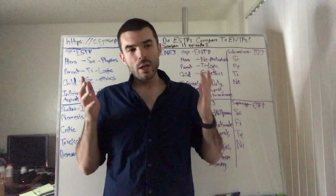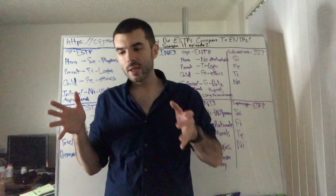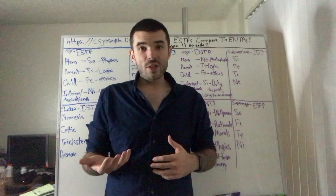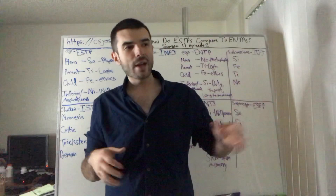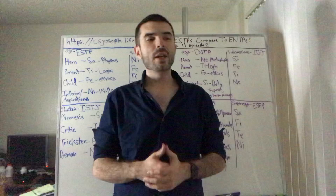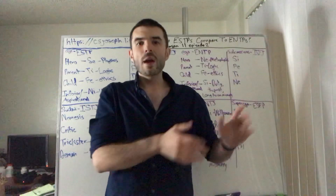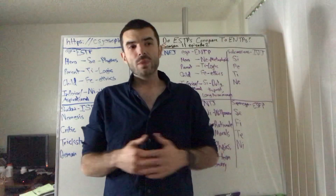ENTPs are very future-focused, very future-thinking, whereas ESTPs are very 'right now' — what is versus what if. ENTPs are very systematic with their approach, whereas ESTPs are more motive-based, interest-based — trying to figure out what's in it for this person, what are we doing, why are we doing it. The systematic approach tries to create a framework to explain why things work.